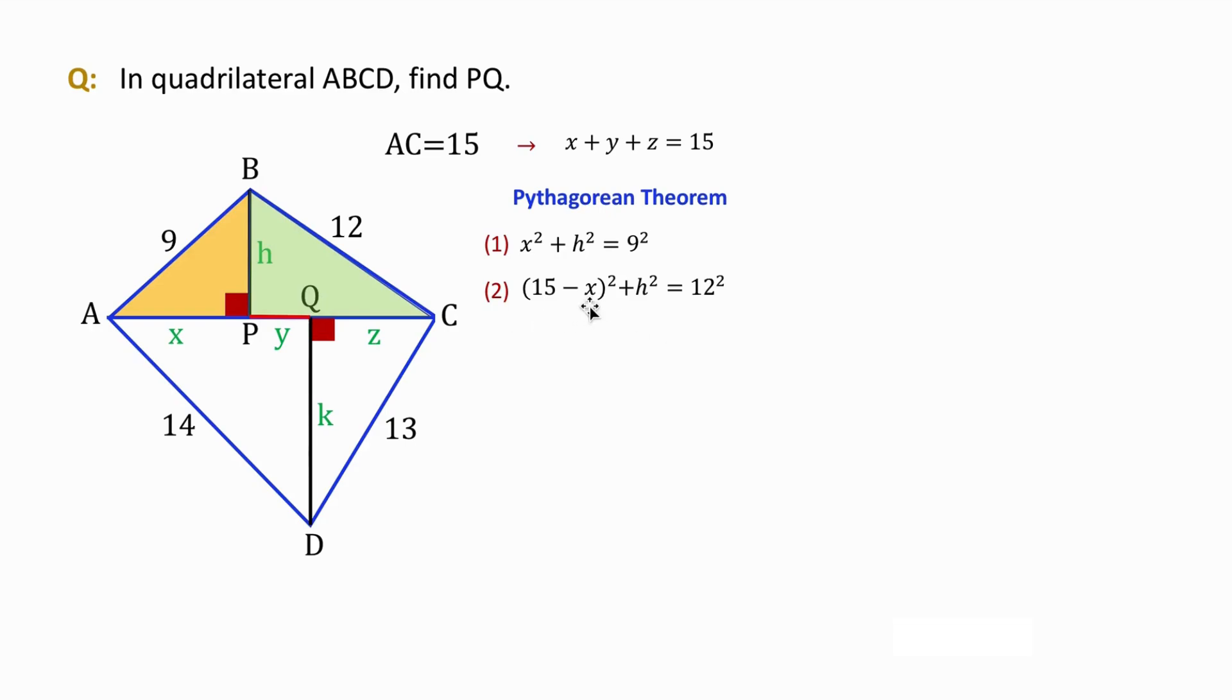15 minus X is PC. And H is the height of the right triangle. We can do the same for the bottom right and bottom left right triangles.